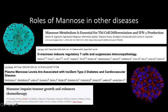Additionally, mannose was found to be associated with diabetes and cardiovascular disease. So these are very different from the CDGs that we talked about, but it's very important to look at this variety of diseases that mannose could potentially be involved in. In fact, mannose was also found to impair tumor growth and enhance chemotherapy.